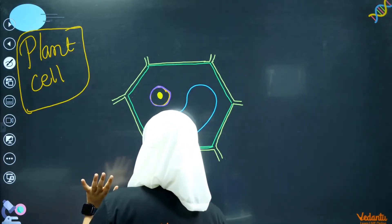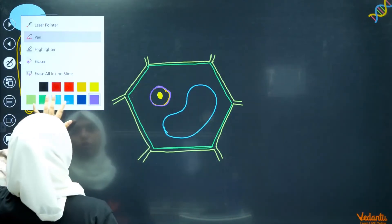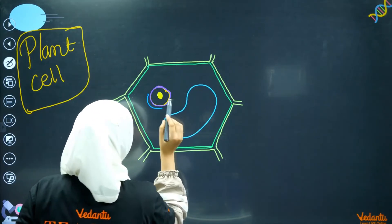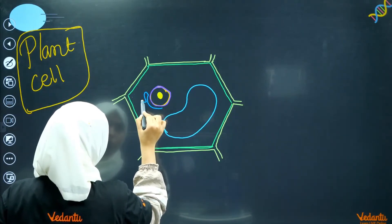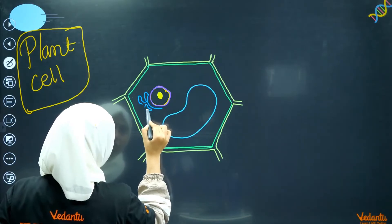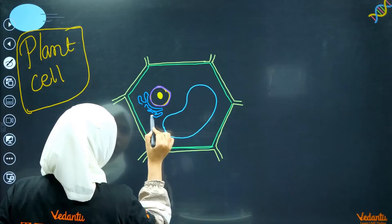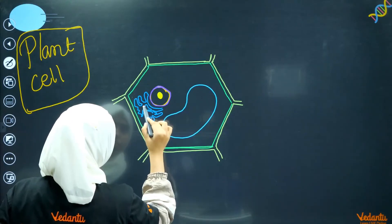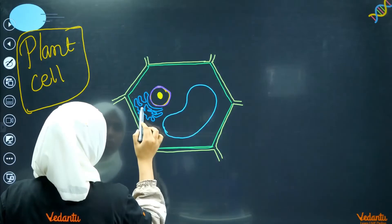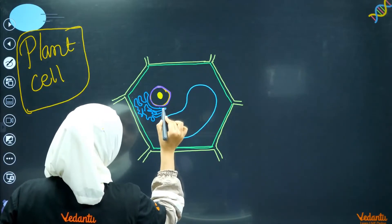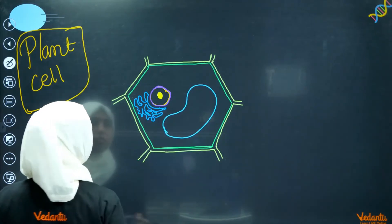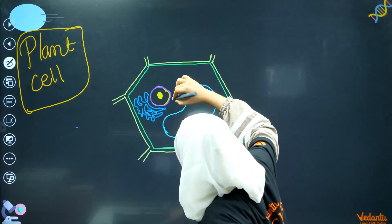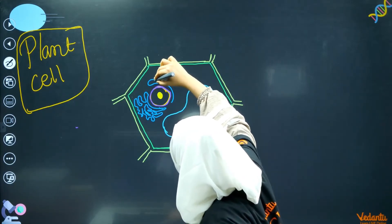We have the endoplasmic reticulum. We will take this color for the endoplasmic reticulum. Simply, we will draw the endoplasmic reticulum like this — drawing the wavy lines of the endoplasmic reticulum.